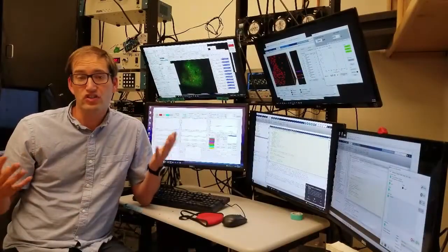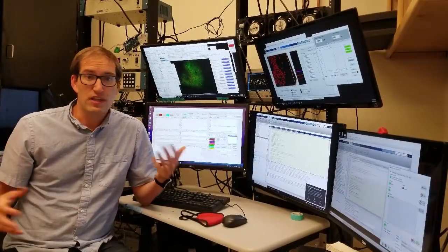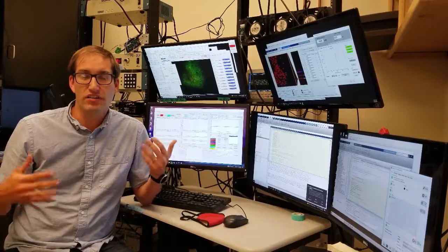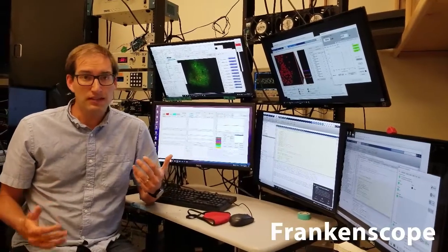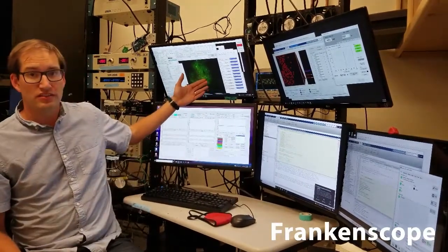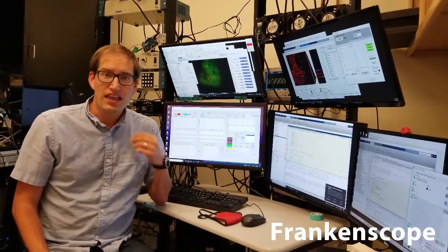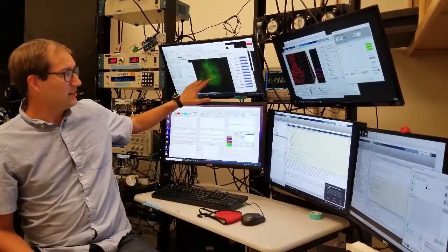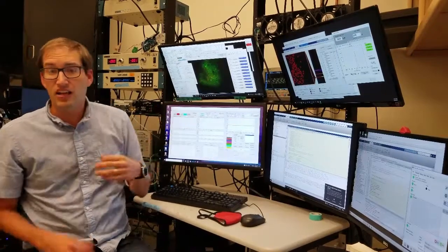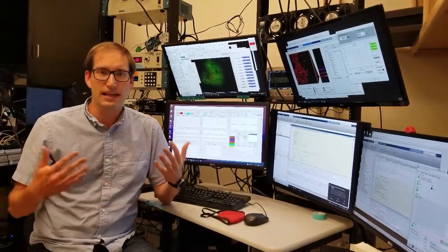So this is the first rig that we're going to show you today. This rig we affectionately call the Frankenscope. It combines a multiphoton imaging system with a multiphoton optogenetic stimulation system. This allows us to point to any cell that's expressing an opsin and cause that cell to fire in any pattern that we want.